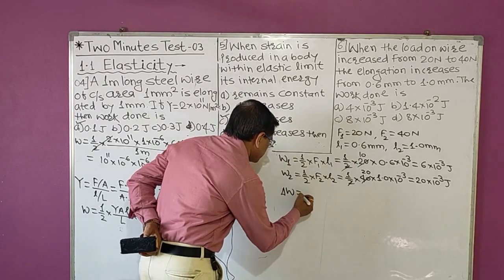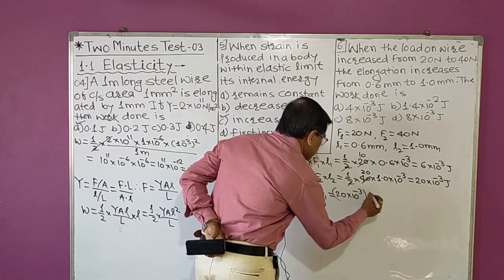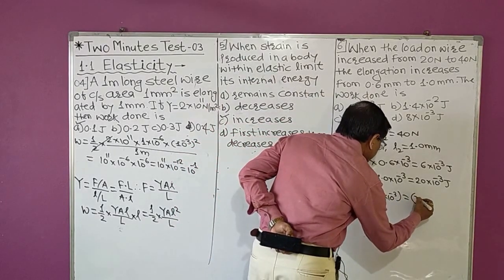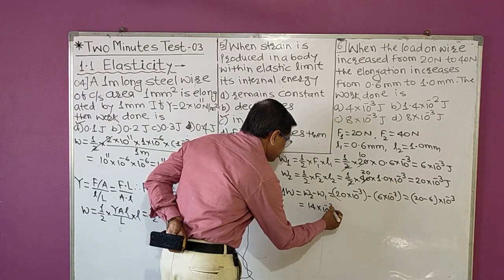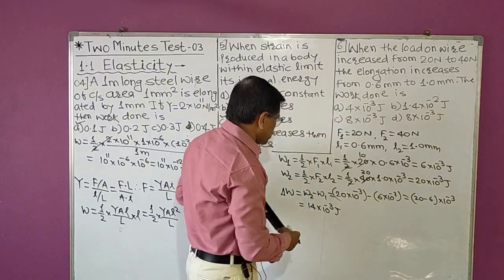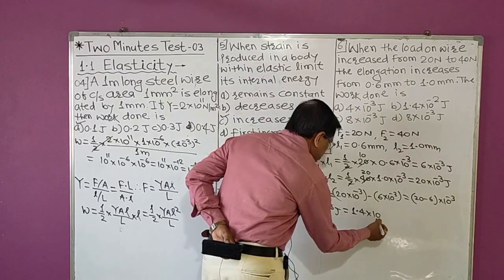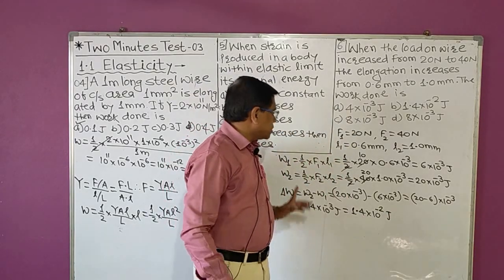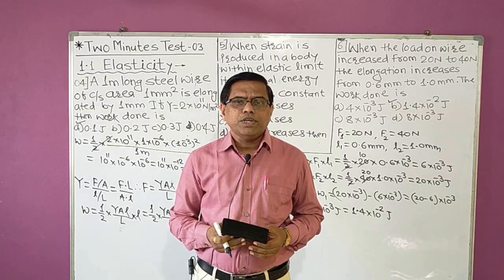ΔW = 14 × 10⁻³ J. Shifting the decimal, this equals 1.4 × 10⁻² J. Checking options, 1.4 × 10⁻² J is present in option B. So the answer to MCQ 6 is option B. This completes the 6 MCQs on elasticity based on strain energy. Now we will solve MCQs based on thermal stresses and thermal strain.